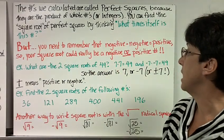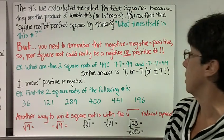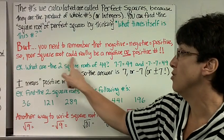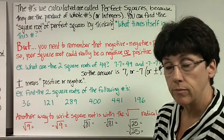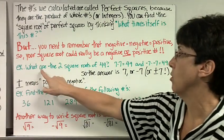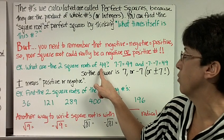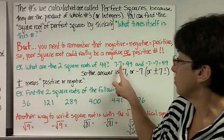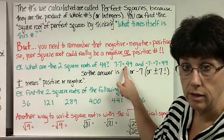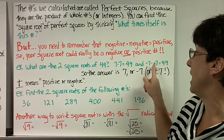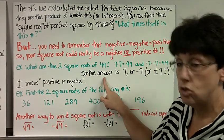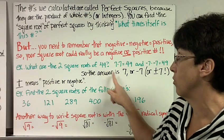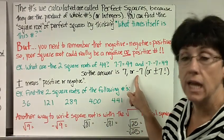But, you need to remember that negative times negative equals positive. So your square root could really be a negative or a positive number. Example, what are the two square roots of 49? Well, 7 times 7 is 49, and negative 7 times negative 7 is 49. So the answer to what are the two square roots of 49 is 7 or negative 7.